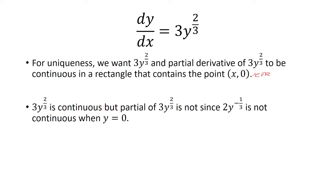the partial derivative of 3y to the 2/3 with respect to y is 2y to the negative 1/3 power. So, if I were to rewrite this, it would be 2 over y to the 1/3.